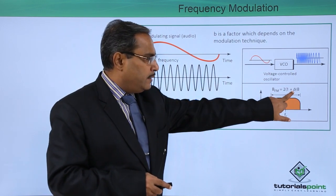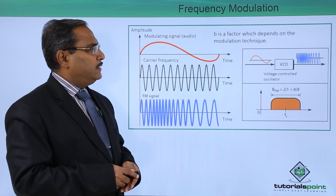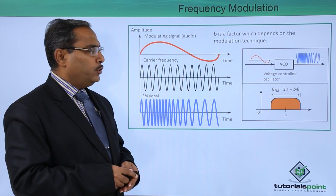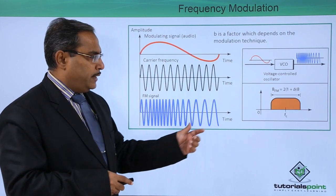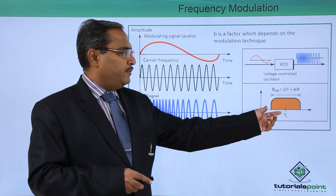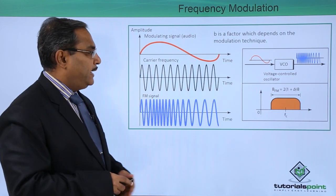Now, what is B here? This B is the factor which depends on the modulation technique. In this way, the bandwidth for the frequency modulated signal can be calculated.